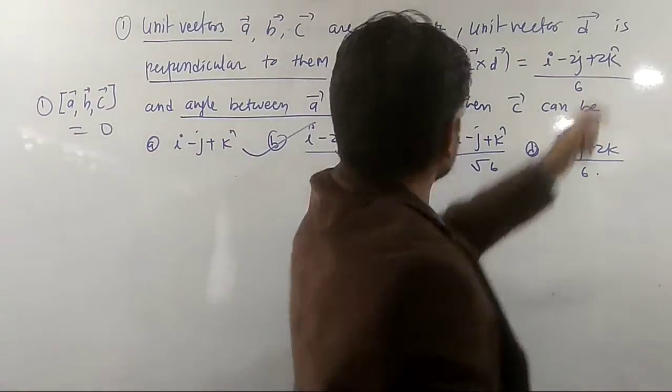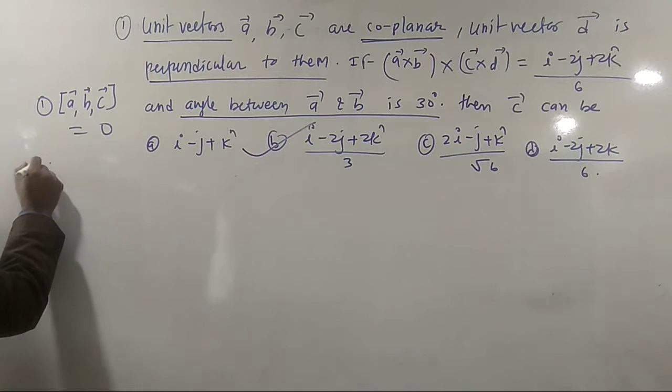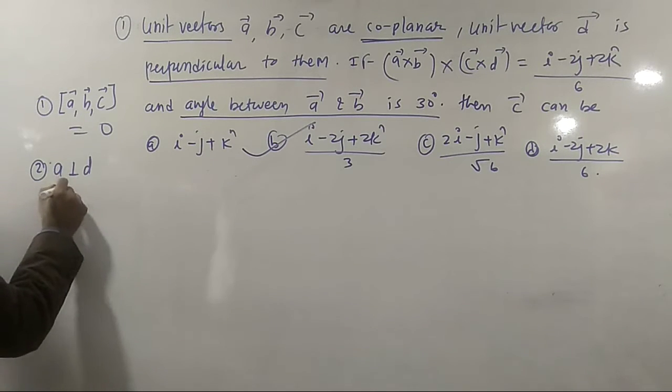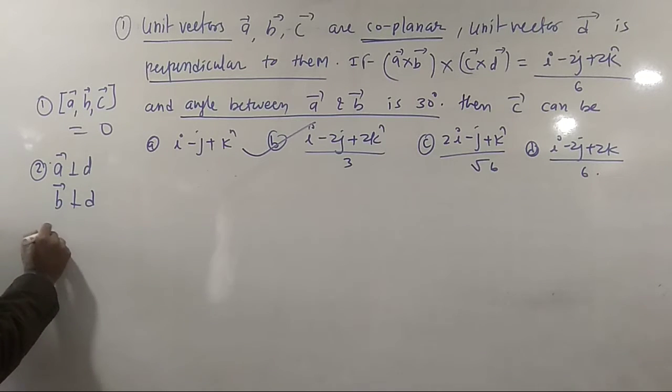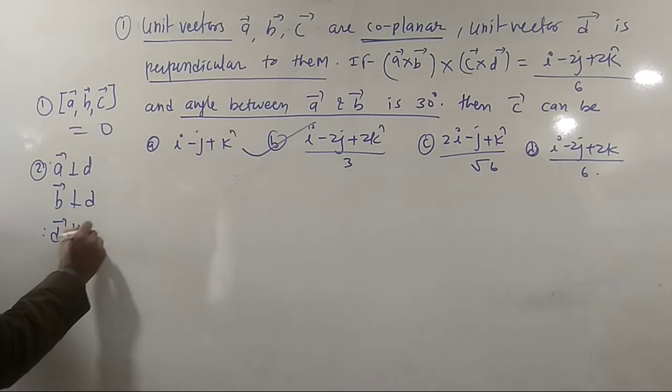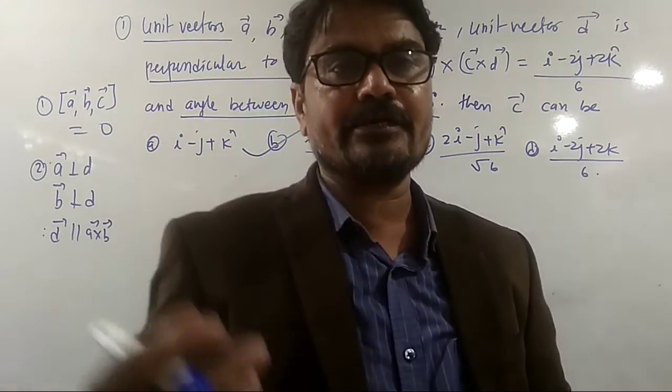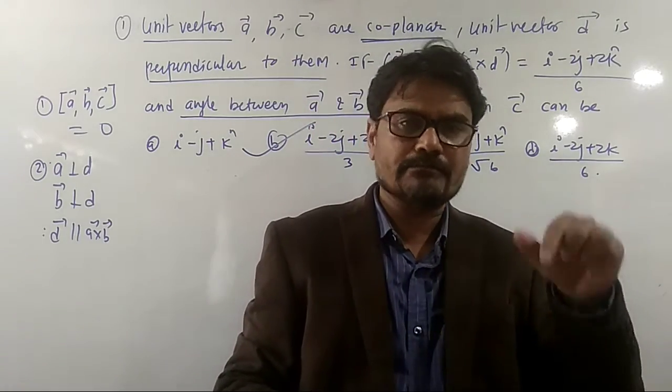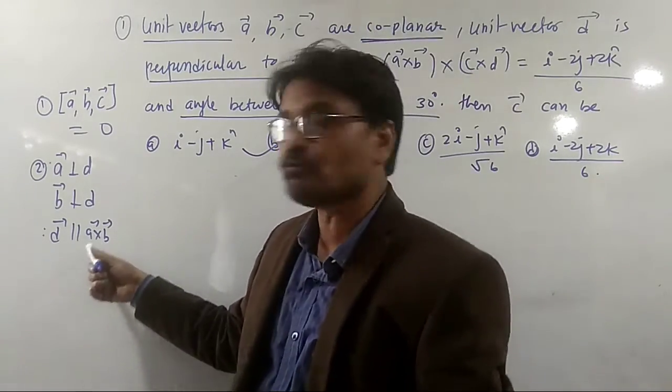The unit vector D is perpendicular to A and B. That means D is perpendicular to both A and B. Because if D is perpendicular to both A and B, then the cross product of A and B is already perpendicular to the vector A and the vector B itself. Because of that, D is parallel to A cross B.